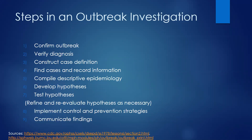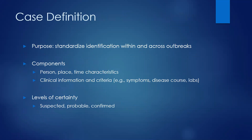If you are confident that you have more cases than expected and that they are all indeed the same type of disease, then you can start to build your case definition for the outbreak. A case definition is really just a way to standardize the identification of cases, both within an outbreak and also across outbreaks, so you can compare different settings and different populations over time. They should have person, place, and time characteristics to make it specific to your outbreak, and some clinical information and criteria for what counts as a case. Typically, we use different levels: suspected cases, probable cases, and confirmed cases.